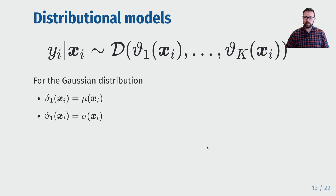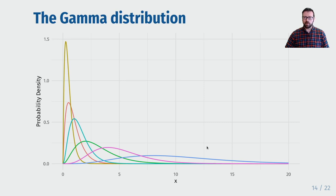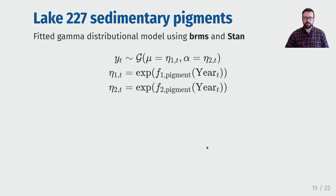In this model we say that the response values y_i, given the values of one or more covariates x_i, follows some distribution D with parameters theta, which are themselves functions of one or more covariates. For the Gaussian distribution, theta_1 would be the mean and theta_2 the variance or standard deviation. We do not need to restrict ourselves to the Gaussian distribution however. The gamma distribution would be more appropriate for describing the pigment data as it allows for positive continuous values where those values might be skewed with some large values. Here I'm showing different types of gamma distribution that vary in the mean and their variance.